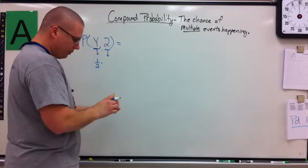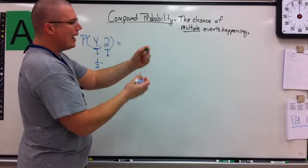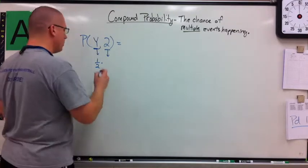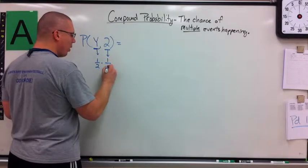Probability of rolling a two. Well, again, I have one side that has two on it, and six total sides. So I would have one out of six.